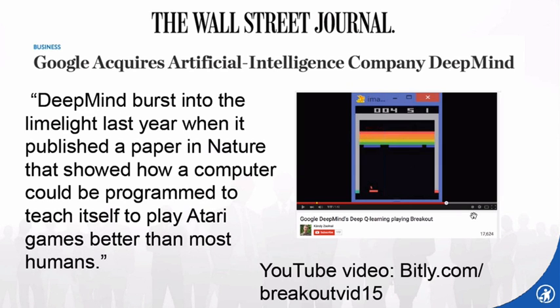There's also an article from the Wall Street Journal about Google spending about $400-$500 million to acquire a company called DeepMind. DeepMind burst into the limelight when it published a paper in Nature showing how a computer could be programmed to teach itself to play Atari games better than most humans. The computer at first knows nothing of the rules for the Atari game, and eventually it starts figuring out the rules, then starts playing, and then starts playing better than a human could. That's something that's happening today.